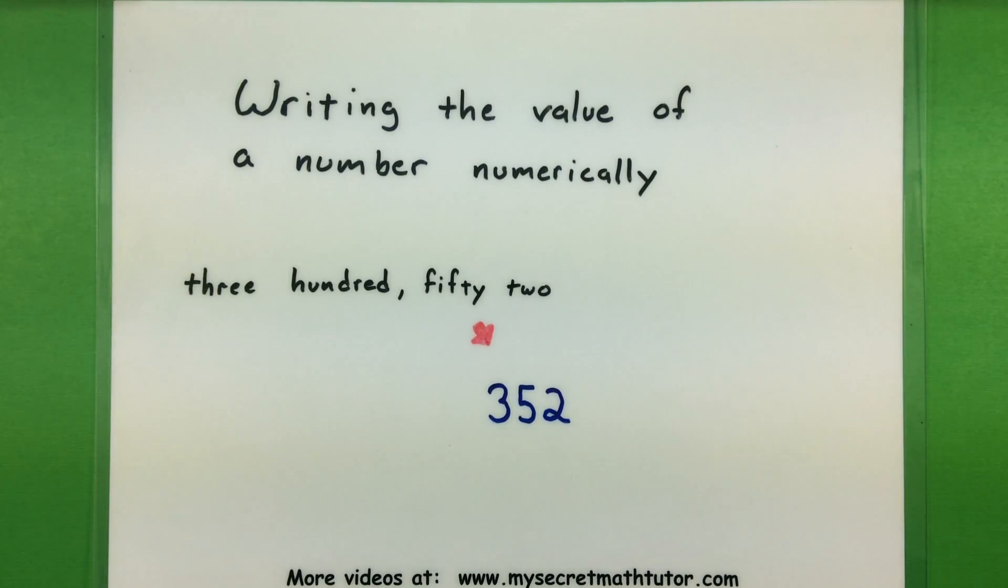Now if you're not sure what that means, that essentially means taking the written out version or the spoken version and turning it into a number itself. So, a number like 352 written out is really just 352 and that's the same number.